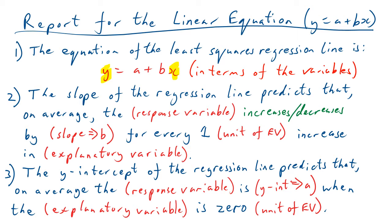And then the second one is the slope of the regression line predicts that on average, the whatever the response variable is, will increase or decrease. Now increase is if you've got a positive slope, and you say decreases if it's a negative slope on that line. And that slope is just your b value. And you say for every one, whatever the units of the explanatory variable is, increase in explanatory variable. Very common mistake to get the response and explanatory variables the wrong way around on this. Even some very good students have done that recently.